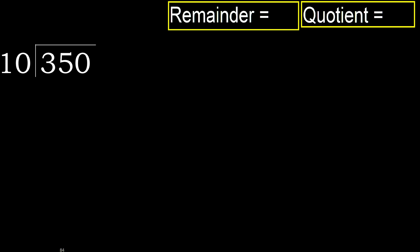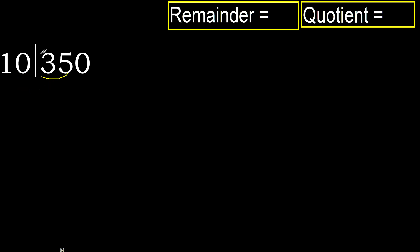350 divided by 10. 3 is less than 10, therefore move to the next digit. 35 is not less than 10, therefore work with 35.